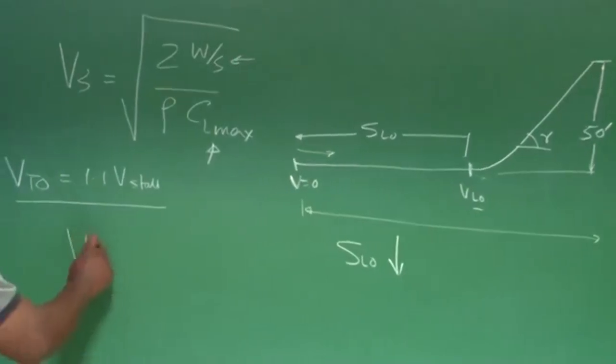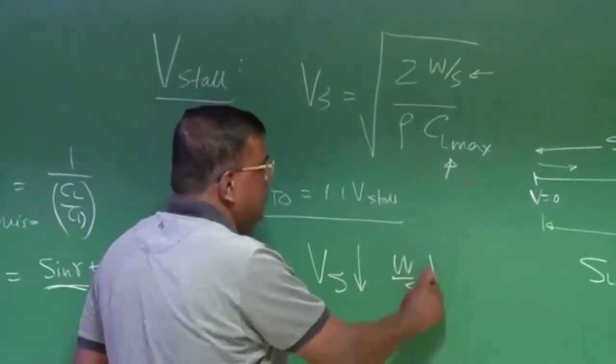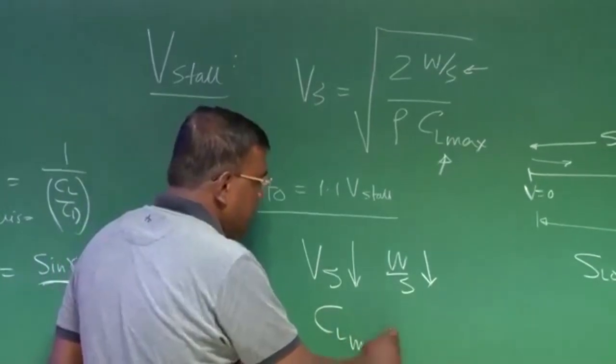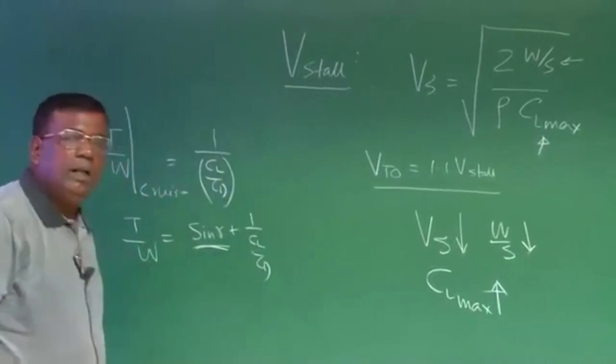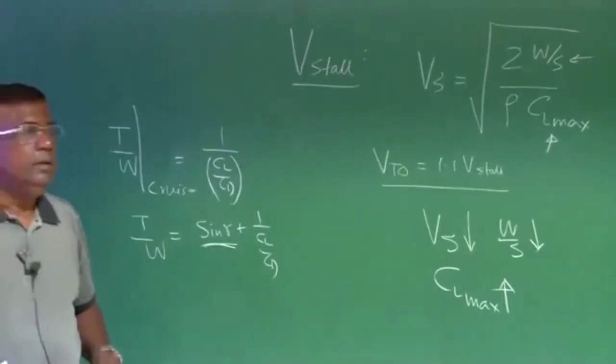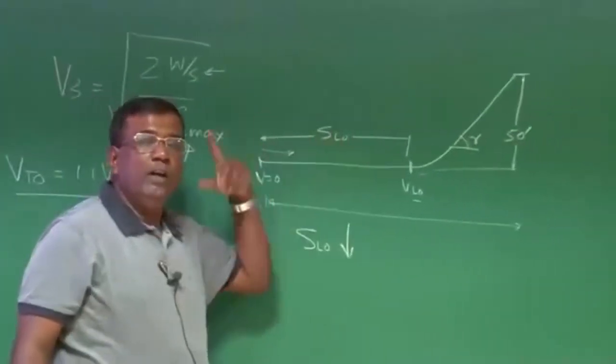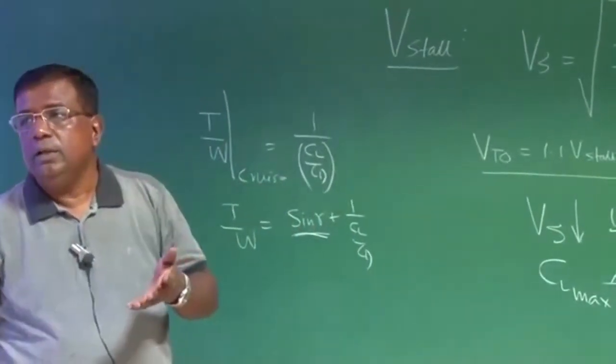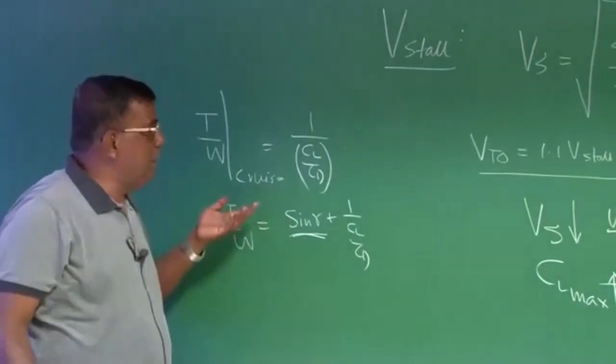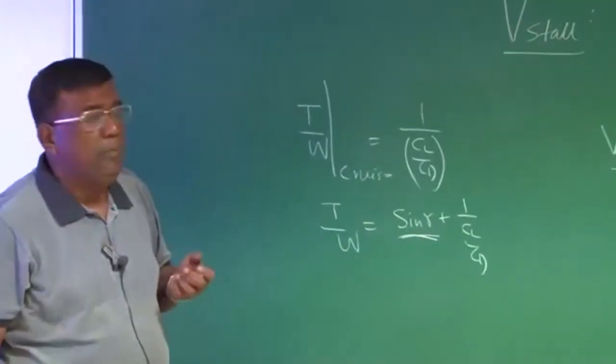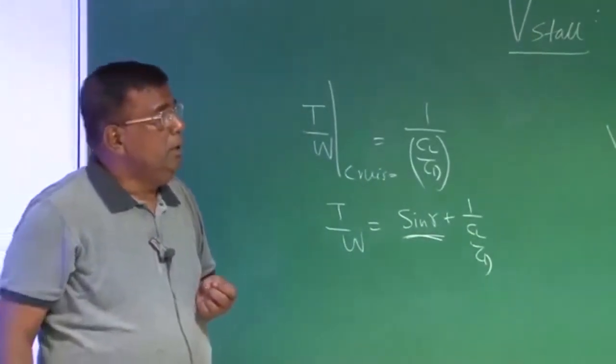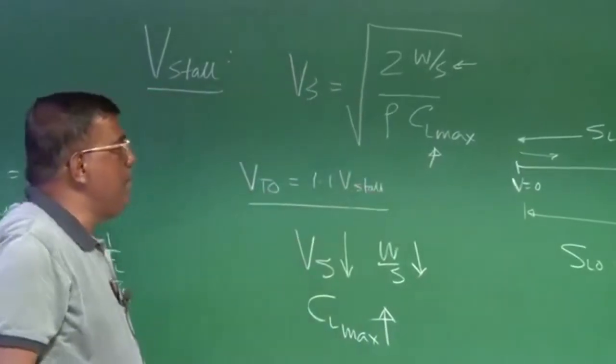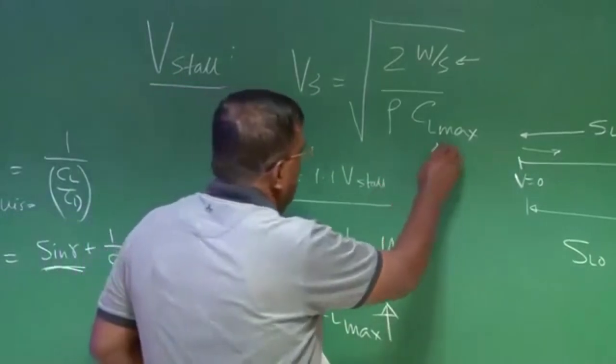So a designer will always look for, if I want to reduce V stall, I will see that W by S is lower and or CL max I increase. Because if I can locally increase CL max during takeoff, then I will be able to handle this issue, knowing very well that if I keep higher CL max, there will be higher induced drag. But during cruise I do not require that much of CL max because that time CL requirements are not that high, maybe 0.2, 0.3. So the whole attention goes when you talk in terms of V takeoff which is some percentage of V stall. It goes towards CL max, how can I increase CL max?